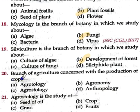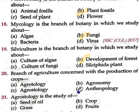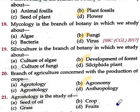Question number 20: which branch of agriculture is concerned with the production of crops? Options are A) Agrotology, B) Agronomy, C) Agrostology, and D) Anthropology. The correct answer is option B, Agronomy. In agronomy, we study the genetic behavior of crops to produce higher quality yields, as well as crop physiology and environmental management.